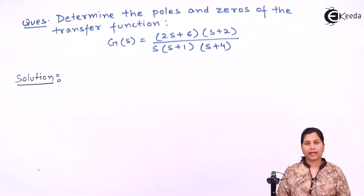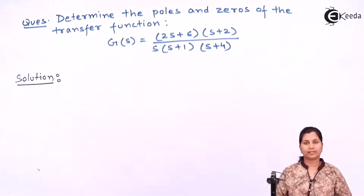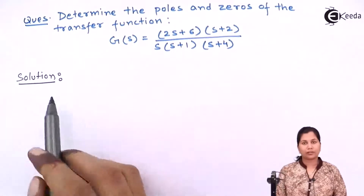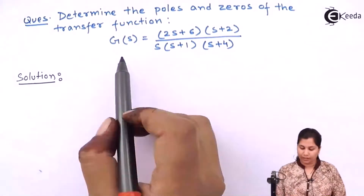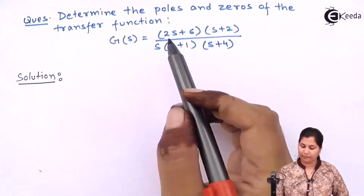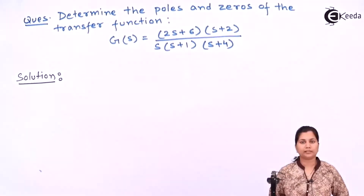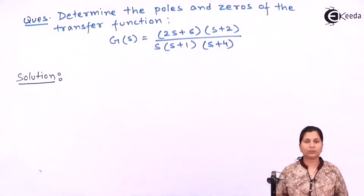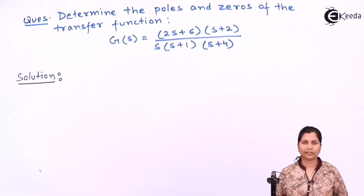We know that when we want to determine the poles and zeros, we have to factorize the numerator polynomial and the denominator polynomial. We have to equate the numerator polynomial and the denominator polynomial to zero and find out their factors. So let's find out the factors of the numerator and the denominator polynomial.